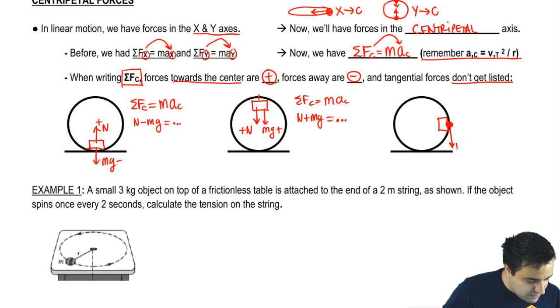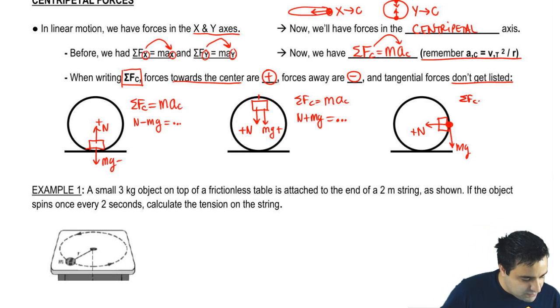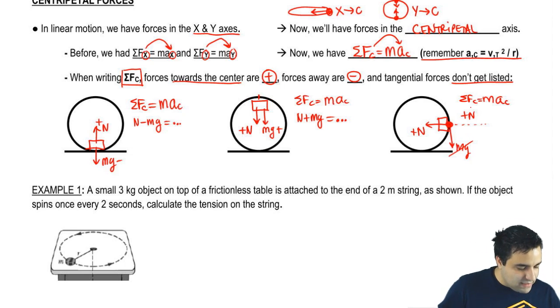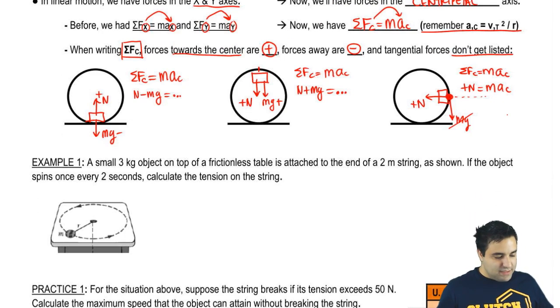What about here? Well, mg is always pulling down, and normal is always perpendicular to the surface. Notice how in all of these, normal is going to be positive because it's the force that keeps you in the circle. If I were to write this, sum of all forces equals ma_c, I have normal as positive, and mg doesn't get listed. Why? Because you only list forces that are into the circle or directly away from the circle. If you're making a 90 degrees angle with that direction of towards or away from the circle, which mg does, you just don't get listed. So it's just normal equals ma_c, and we say that mg here is not a centripetal force.